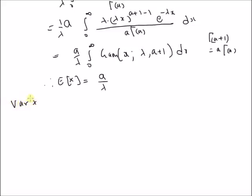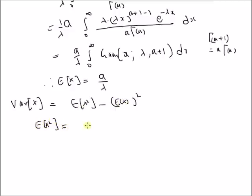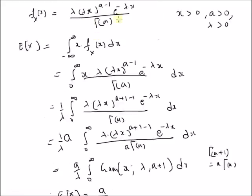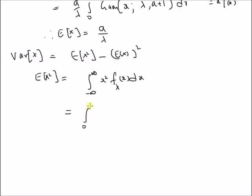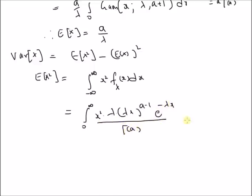Now we want to find the variance of x. Variance is defined as E[X²] − (E[X])². Since we know E[X], we need to find the second moment E[X²], which equals the integral from −∞ to +∞ of x² · f_X(x) dx. Using the definition of the gamma PDF, this becomes the integral from 0 to ∞ of x² · λ · (λx)^(a−1) · e^(−λx) / Γ(a) dx.